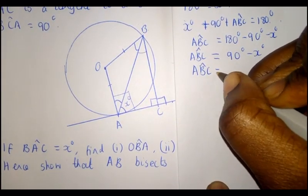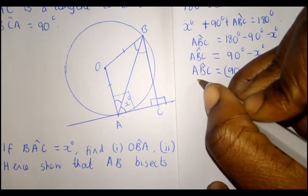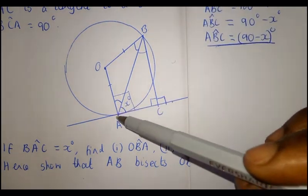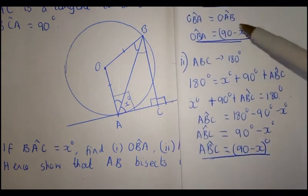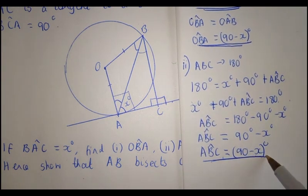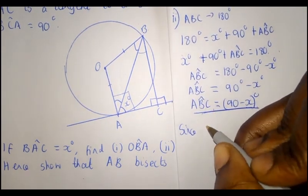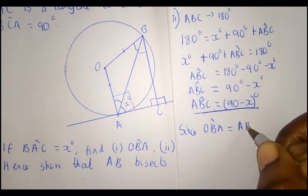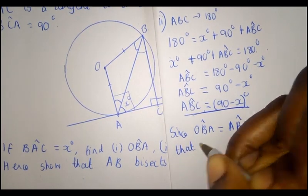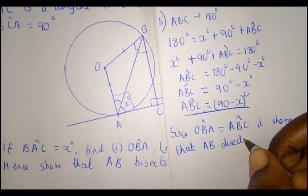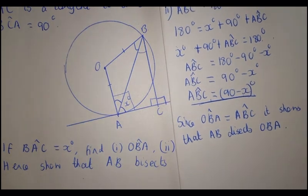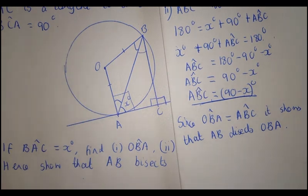Angle ABC equals 90 minus x degrees. For part b, which asks us to show that AB bisects angle OBC: from part a, angle OBA equals 90 minus x degrees, and angle ABC equals 90 minus x degrees. Since angle OBA equals angle ABC, this shows that AB bisects angle OBC. We have finished all the examples — please subscribe to my YouTube channel, Free Tutorials ZW, for more video tutorials. Thank you.